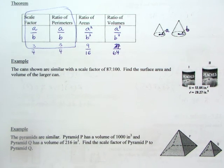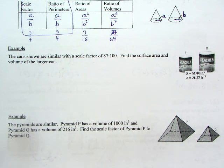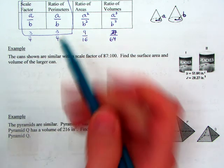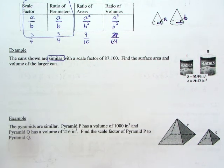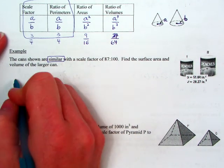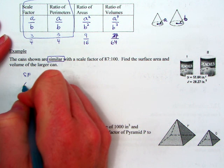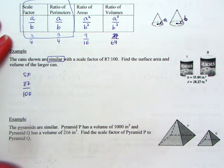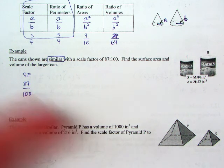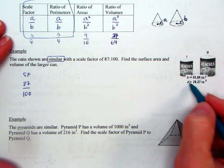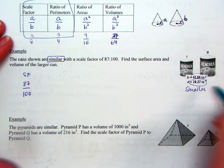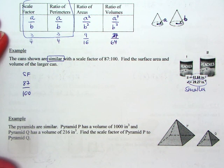So we'll do a couple of examples using that kind of information. So the cans shown are similar, that's key, I've got to have that word, with a scale factor of 87 to 100. So I'm going to go SF, 87 to 100. Find the surface area and volume of the larger can. And they gave me some surface area and volume. That's for the smaller can, since we're going after the larger one. Those numbers are for the smaller shape.